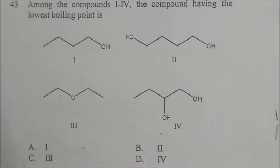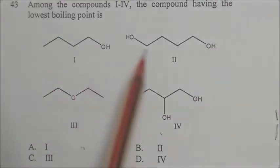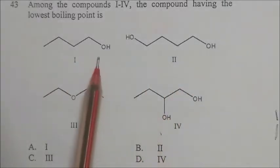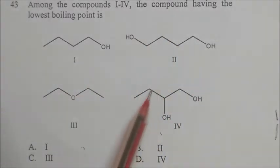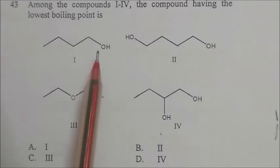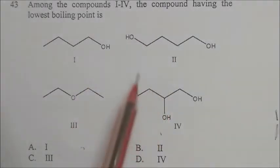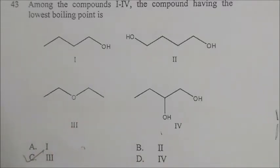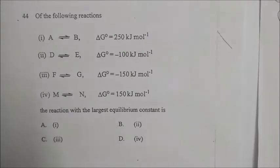Among the following compounds, positions 1, 2, and 4 are alcohols containing -OH groups that form hydrogen bonding with water, giving them a higher boiling point. Position 3 is an ether, which has the lowest boiling point. The correct answer is 43°C for the ether.